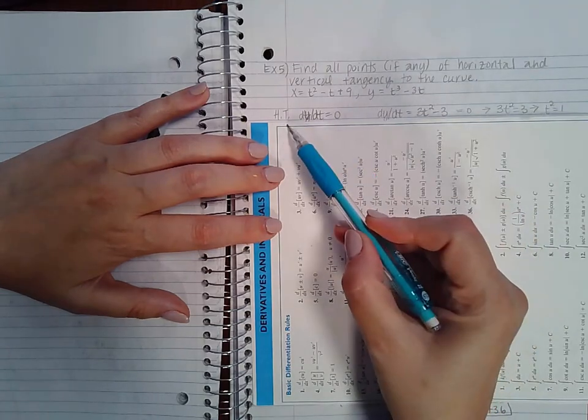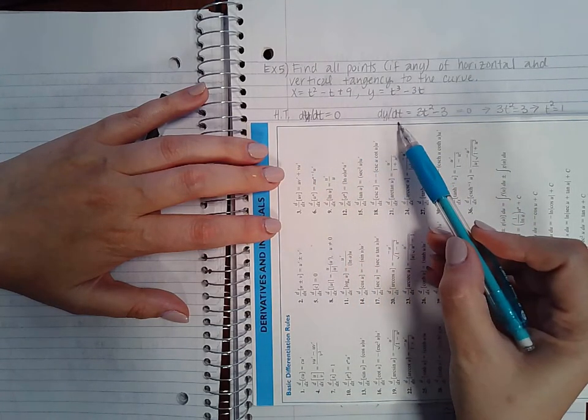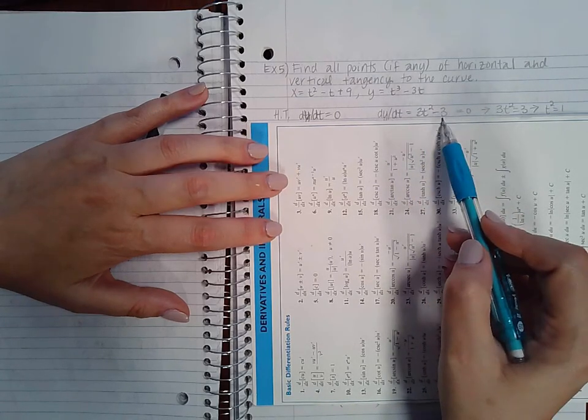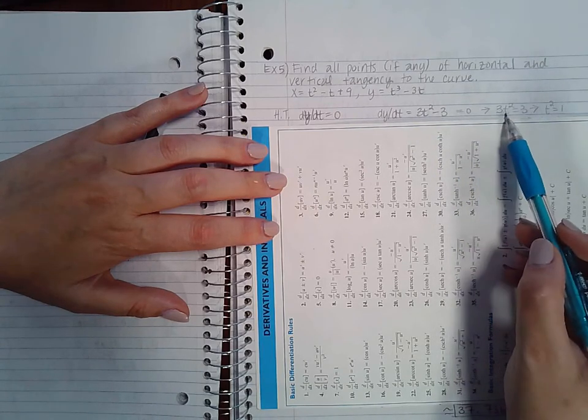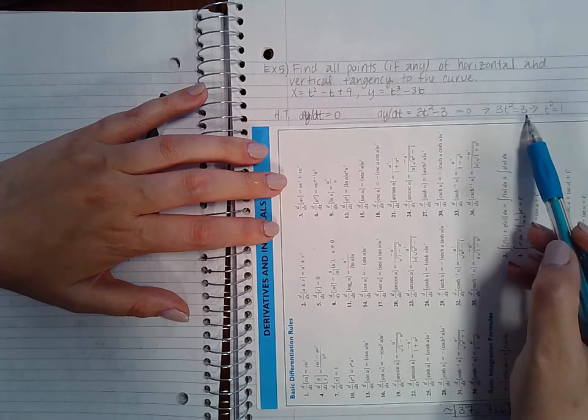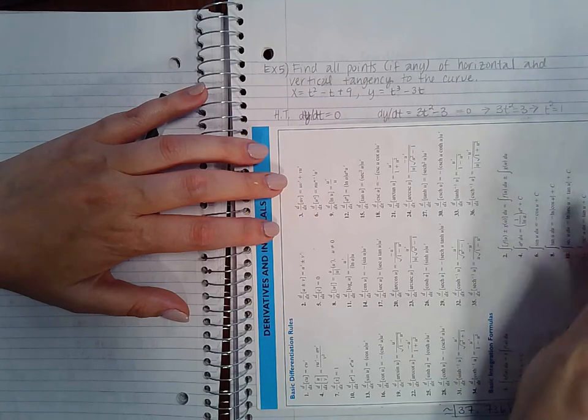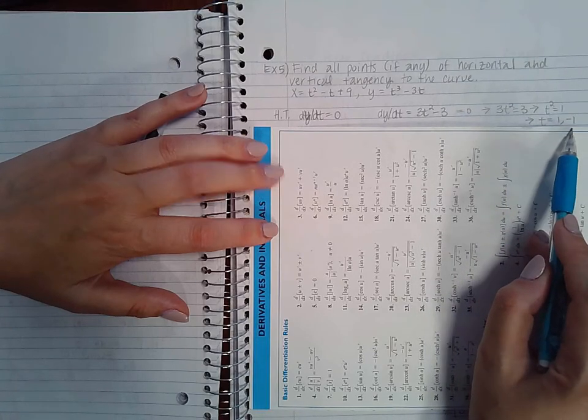Remember for horizontal tangents that's when dy dt equals 0 and dy dt in this case is 3t squared minus 3. If I set that equal to 0 I can add 3 to both sides and get 3t squared equal to 3. Dividing by 3 on both sides, I get t squared equal to 1 which means t equals positive 1 and negative 1.